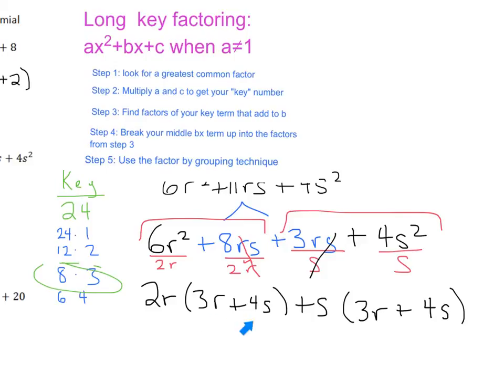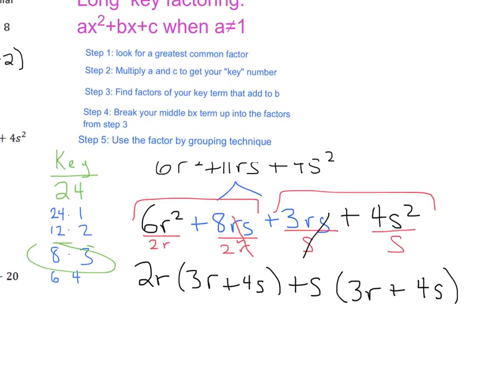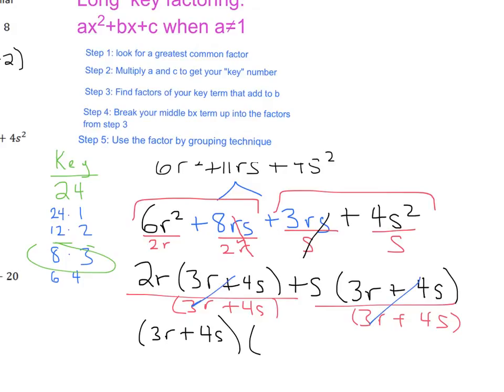So now we can take out a 3R + 4S. So I'm going to write a 3R + 4S out front. That's like dividing each of these by 3R + 4S. Dividing this one by 3R + 4S. We see that what's left over, these are going to cancel, these are going to cancel. And we're going to have, in the first term, a 2R and a plus S. So in the second factor, there's a 2R + S. And that's that one.